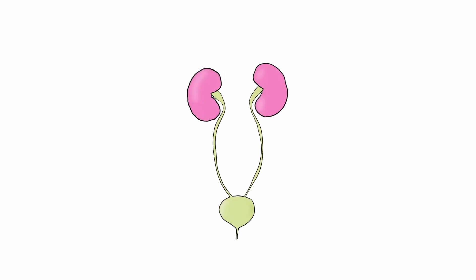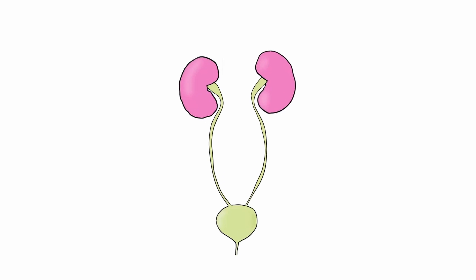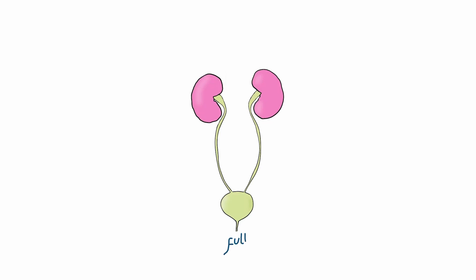The bladder is distensible and its shape therefore changes with the volume of urine it stores. When full, it's oval-shaped and, when empty, it's flattened by the pressure within the abdominal cavity.